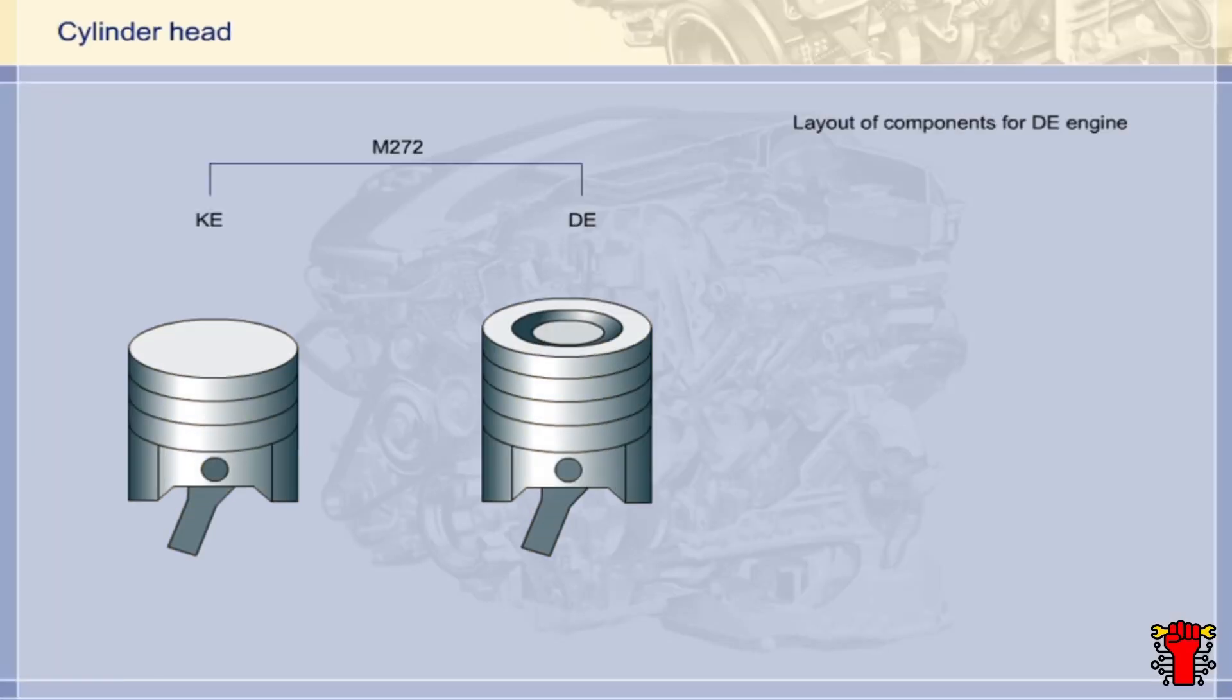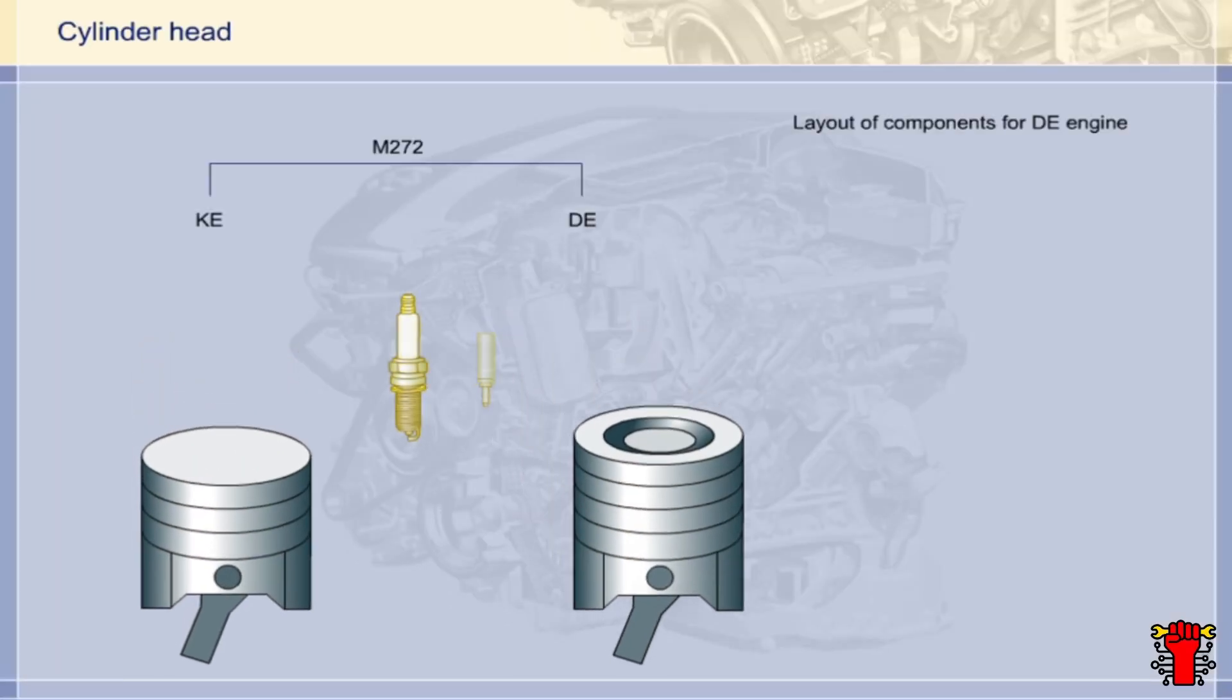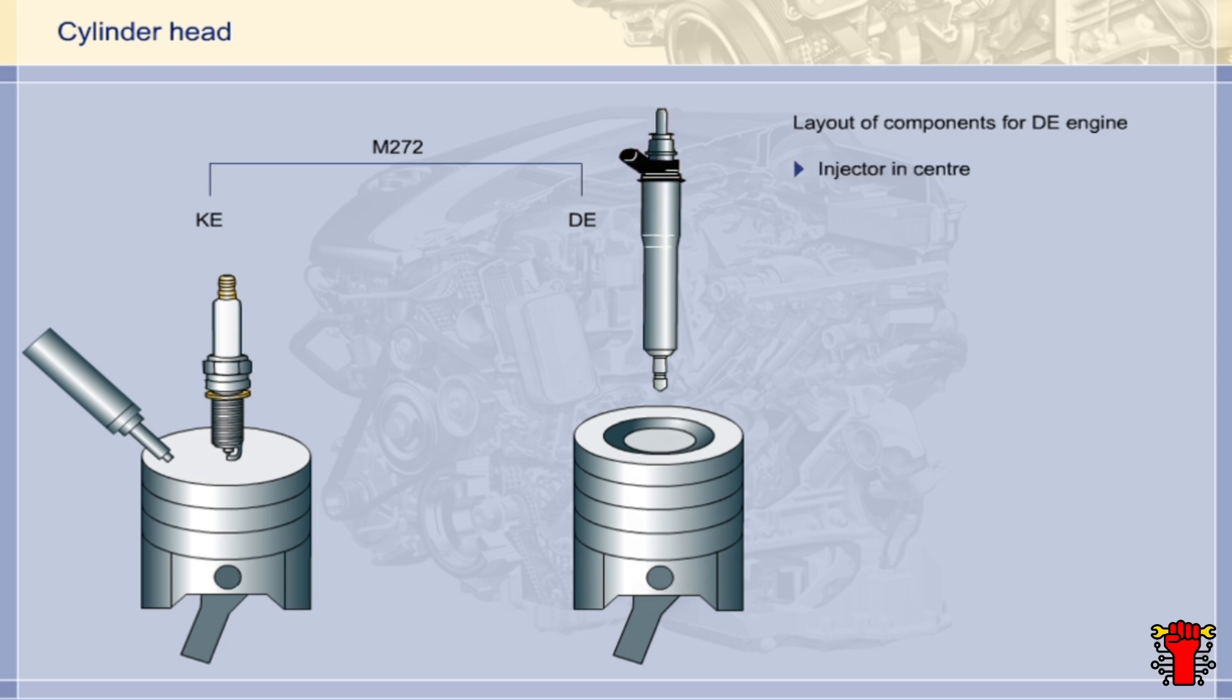The layout of the components in the cylinder head is also different. On the KE engine, the spark plug is positioned centrally in the cylinder whilst the injector is on the side. On the DE engine, the center position is occupied by the injector. This benefits the new spray-guided combustion process. The spark plug has been moved to the exhaust side and is installed at an angle so that the spark plug's overhead electrode is immersed precisely into the edge of the injection spray cone.